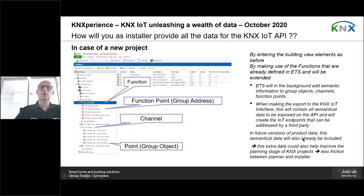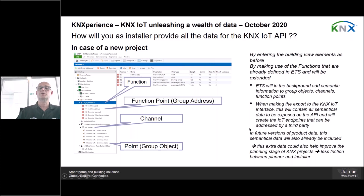As a first step, we will create a static interface based on OpenAPI, because there are widely available tools for that. As an installer, you will do your work as before — creating building view elements and a topology — but it is highly recommended to also make use of ETS functions. ETS will then, in the background, add semantic information on the group objects, channels, and function points. When you make an export to a KNX IoT interface, this data will already be included. In future versions of product data, manufacturers will also be able to add semantic information to their product data.